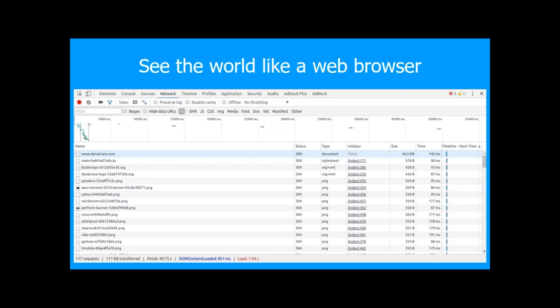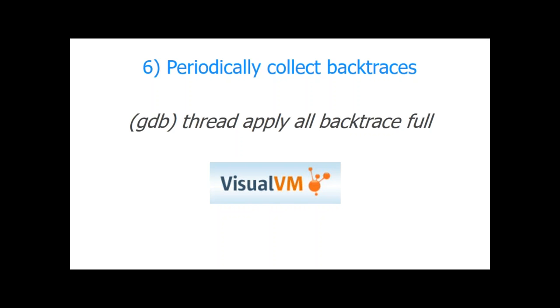The next thing — which is actually something you should do anyway for standalone applications — is to from time to time collect backtraces, and based on that do some statistics and see whether there are hotspots. For Java it's quite easy with VisualVM, or you can also use JMX. For native code I would start with some scripting together with the debugger to see whether there are hotspots.